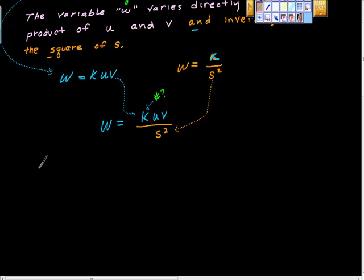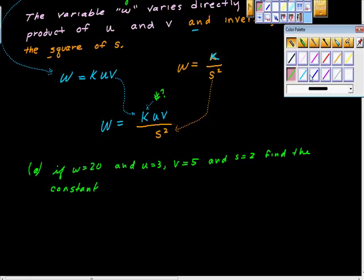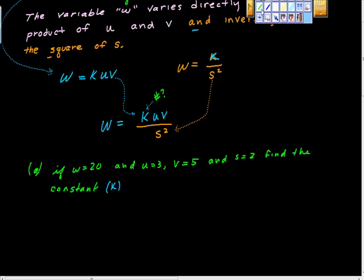If we move on in the question, it says that if w equals 20 and u equals 3, v equals 5, and s equals 2, find the constant of variation. Find the constant k of variation.